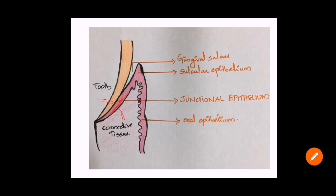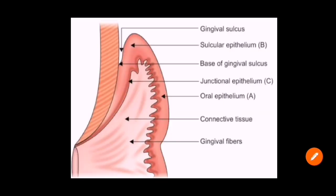The portion at the top is the gingival sulcus. The epithelium lining the gingival sulcus is the sulcular epithelium. From the base of the gingival sulcus downward, this entire portion is the junctional epithelium — facing the tooth on one side and the gingival connective tissue on the other.